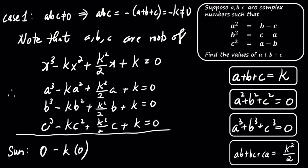Summing these three equations yields 0 minus k times 0 plus k squared over 2 times k plus 3k equals 0, which simplifies to k cubed equals negative 6 times k. Since k is not 0, this leads us to conclude that k equals plus or minus i times the square root of 6.